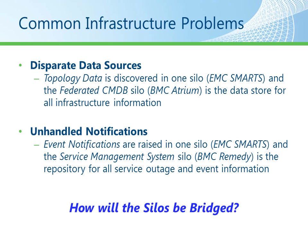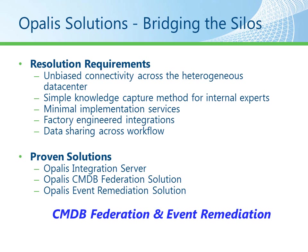There are a couple of common infrastructure problems: disparate data sources and unhandled notifications. How will these silos be bridged? With disparate data sources we have topology data discovered from one silo, say EMC Smarts, and then a federated CMDB silo, say BMC Atrium — how does that data get from one to the other? For unhandled notifications, event notifications may be raised in Smarts and then you need to satisfy the ticketing requirements in something like Remedy. We can bet those silos are going to be bridged with Opalis. In fact we have a couple of Opalis solutions that will solve both CMDB Federation and event remediation.